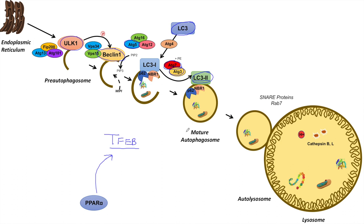PPAR-alpha has a major impact on the macroautophagy pathway. It increases levels of ULK1 and Beclin-1, important in initial steps of the pathway; LC3 and conjugating proteins ATG7 and ATG3, leading to increased LC3-2 and mature autophagosome formation; and TFEB, the master regulator of lysosomal biogenesis and macroautophagy function, which leads to even more upregulation of proteins including those involved in lysosomal biogenesis. PPAR-alpha itself is upregulated by fasting and inhibited by FXR.